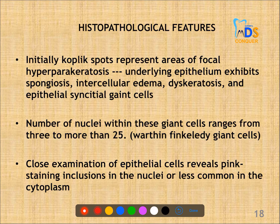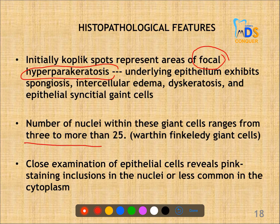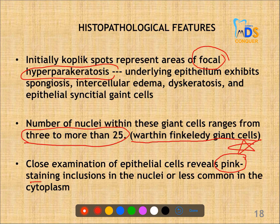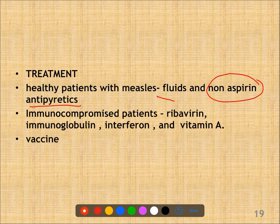In histological features, Koplik's spots are initially areas of focal hyperparakeratosis. The number of nuclei within giant cells ranges from 3 to more than 25, called Warthin-Finkeldey giant cells — this is very important. Close examination of epithelial cells shows pink staining inclusions in the nucleus and less commonly in the cytoplasm, so intranuclear and cytoplasmic inclusion bodies can be seen. Treatment is with fluids and non-aspirin antipyretics, as aspirin causes Reye's syndrome. In immunocompromised patients, ribavirin, immunoglobulin, interferon and vitamin A can be used. A vaccine is available to prevent this infection.